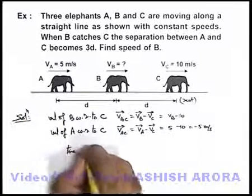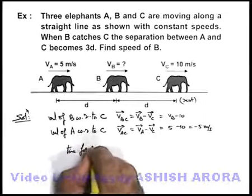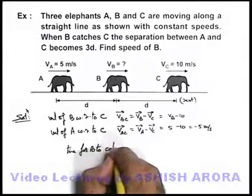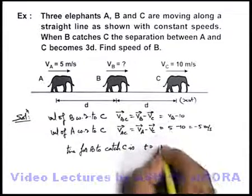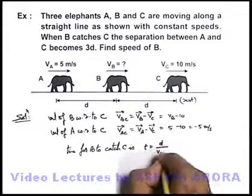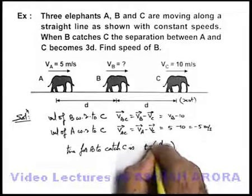So if we find the time for B to catch C, this can be simply given by distance upon velocity, that is d divided by V_B - 10.